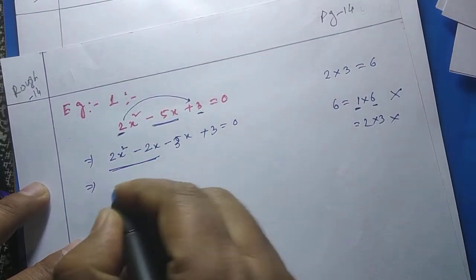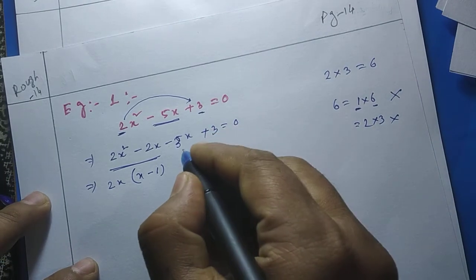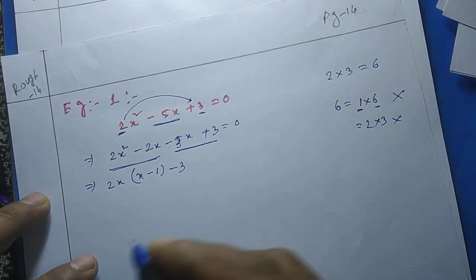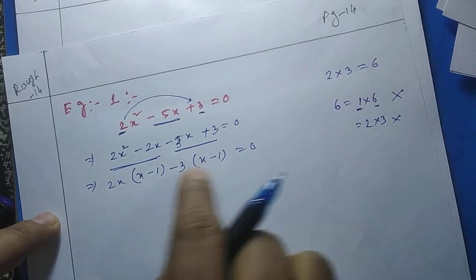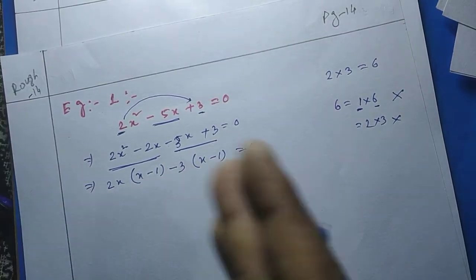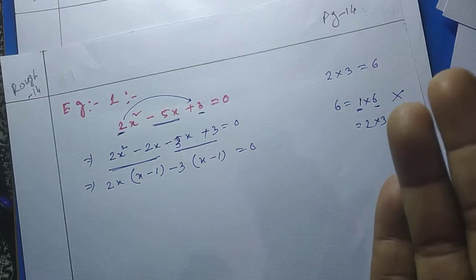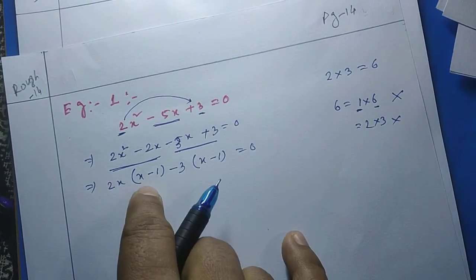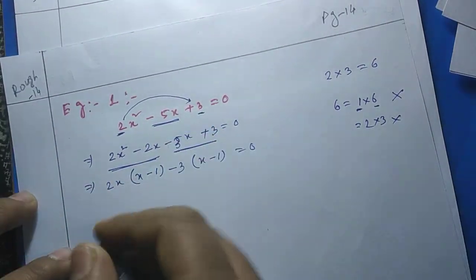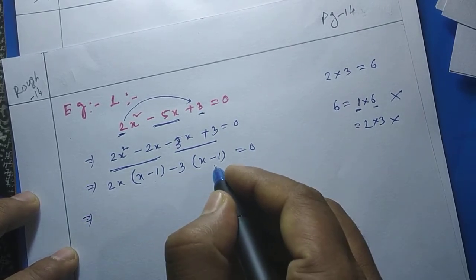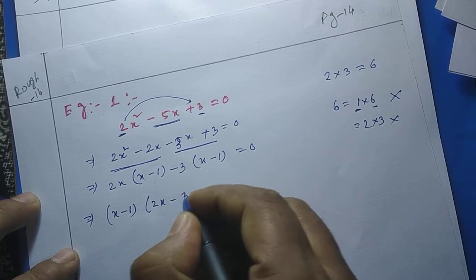Now taking 2x common from the first two terms we get the factor (x − 1). Similarly, taking −3 common from the last two terms we bring out the same factor (x − 1). We have now got two identical factors, which means we are going in the correct direction. If you get different factors it means something has gone wrong and you have to check again. Taking (x − 1) common from the whole expression, it becomes (x − 1)(2x − 3) = 0.